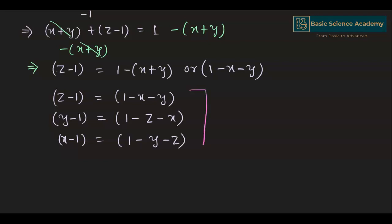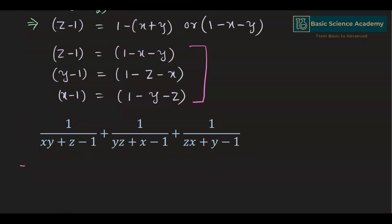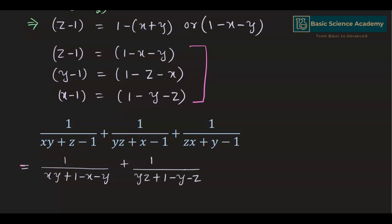Now we will put these values into the equation to find its value. This gives us 1 divided by xy plus (z minus 1) = (1 minus x minus y), plus 1 divided by yz plus (x minus 1) = (1 minus y minus z), plus 1 divided by zx plus (y minus 1) = (1 minus z minus x).